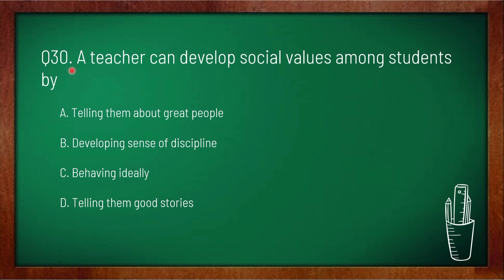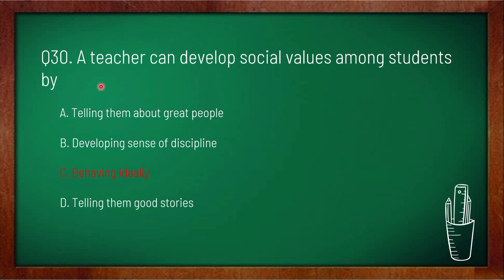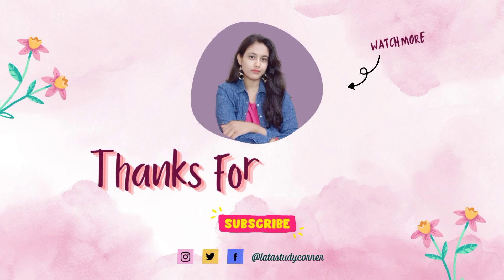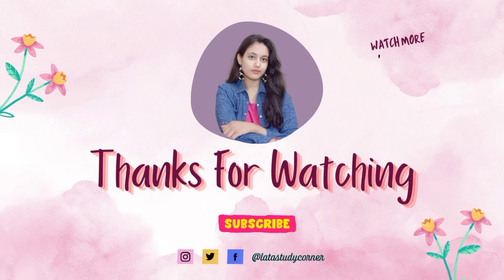Question 30: a teacher can develop social values among students by — option A: telling them about great people, option B: developing a sense of discipline, option C: behaving ideally, option D: telling them good stories. Option C is correct — a teacher can develop social values among students by behaving ideally. Thanks for watching; subscribe to my channel for more such content and don't forget to like, comment and share.